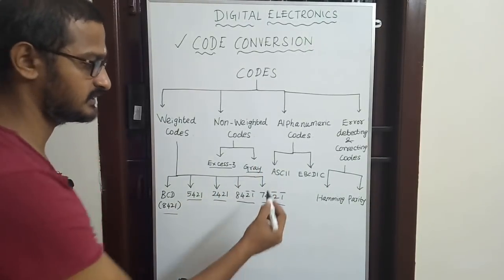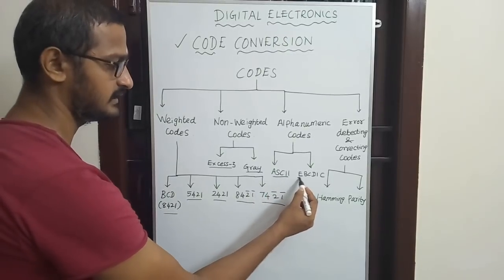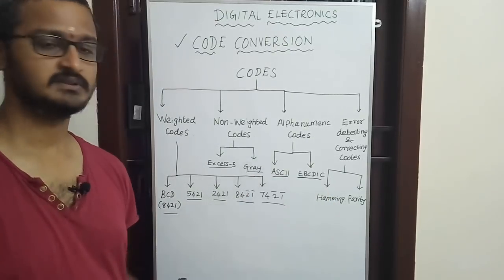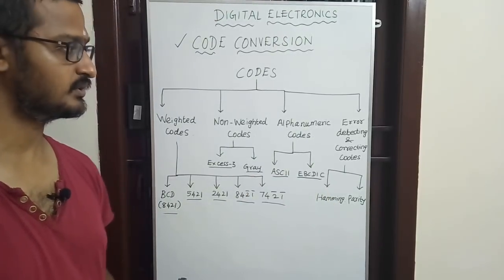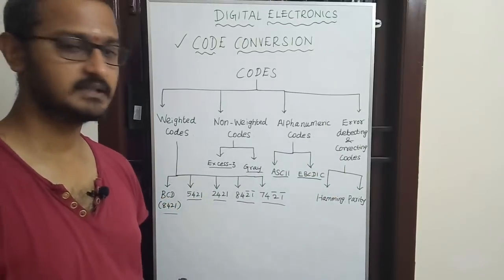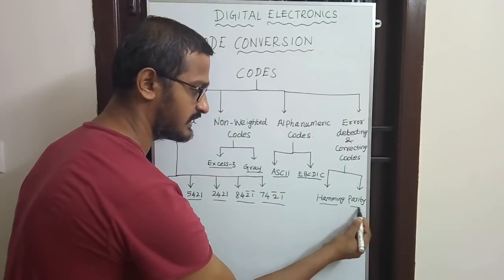Alphanumeric Codes include ASCII and EBCDIC. Error detecting and correcting codes include Hamming and Parity.